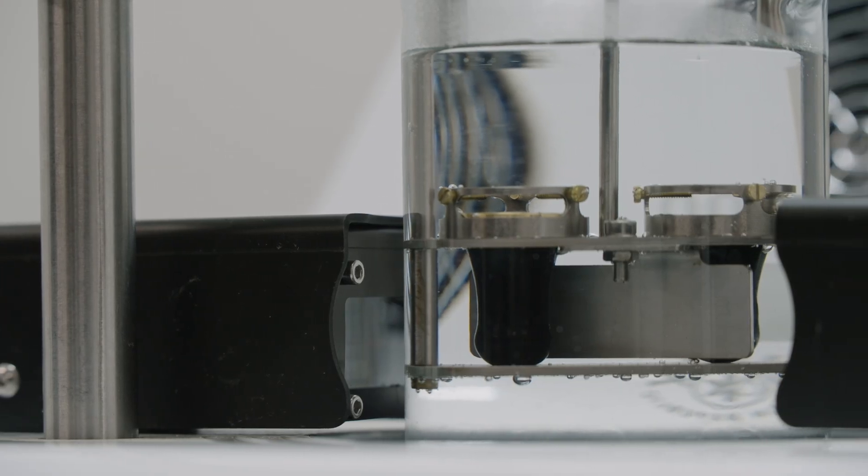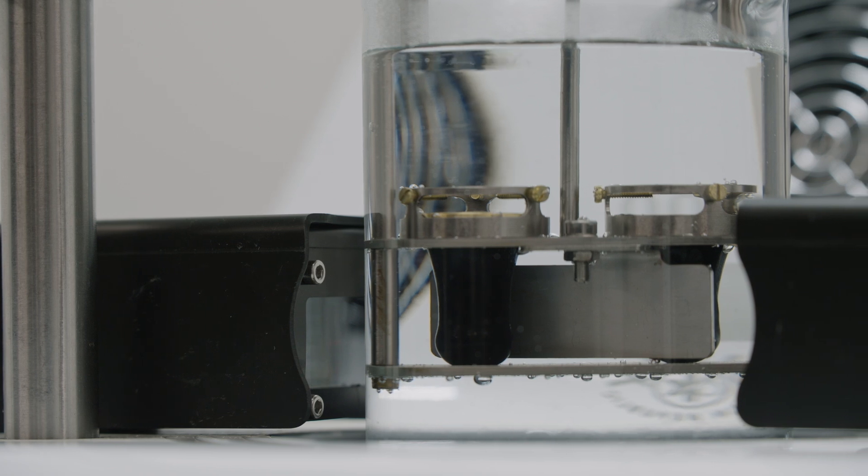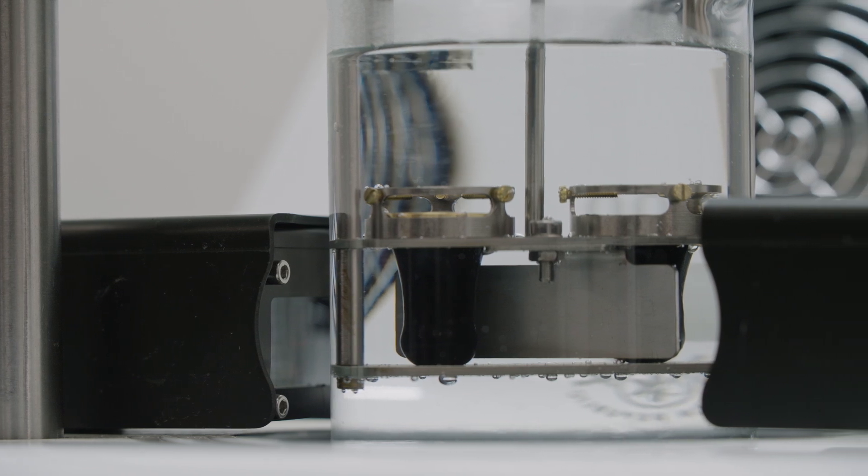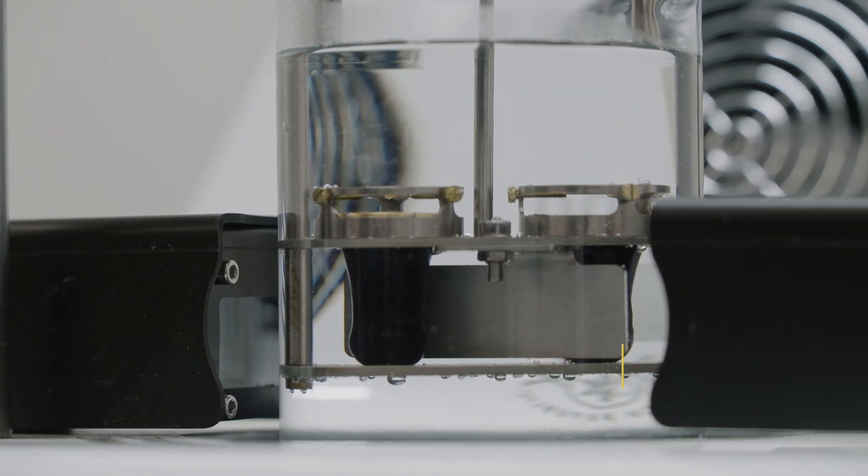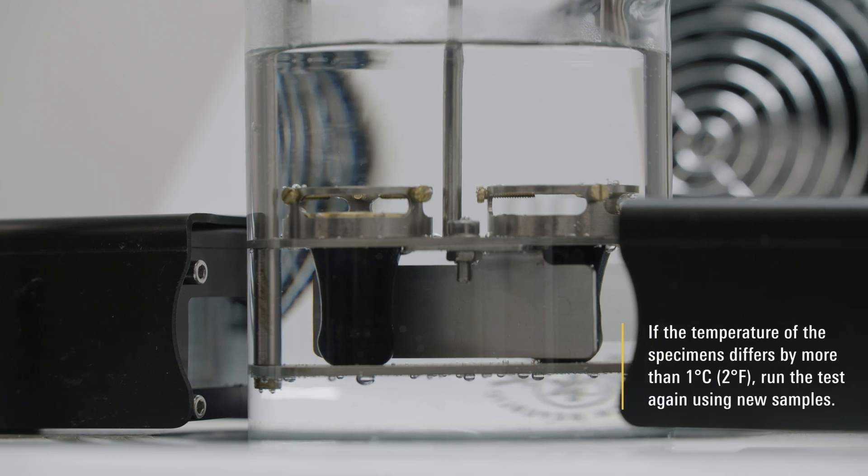As the asphalt binder surrounding each test specimen touches the bottom plate, immediately record the temperature shown on the thermometer. If the temperature of the specimens differs by more than 1 degree C, run the test again using new samples.